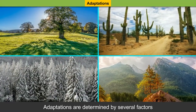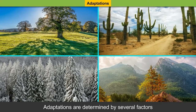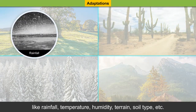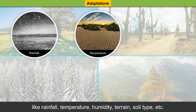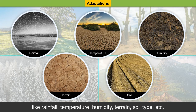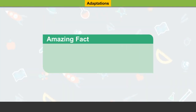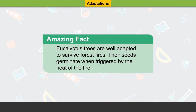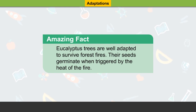Adaptations are determined by several factors like rainfall, temperature, humidity, terrain, soil type, etc. Amazing Fact: Eucalyptus trees are well adapted to survive forest fires. Their seeds germinate when triggered by the heat of the fire.